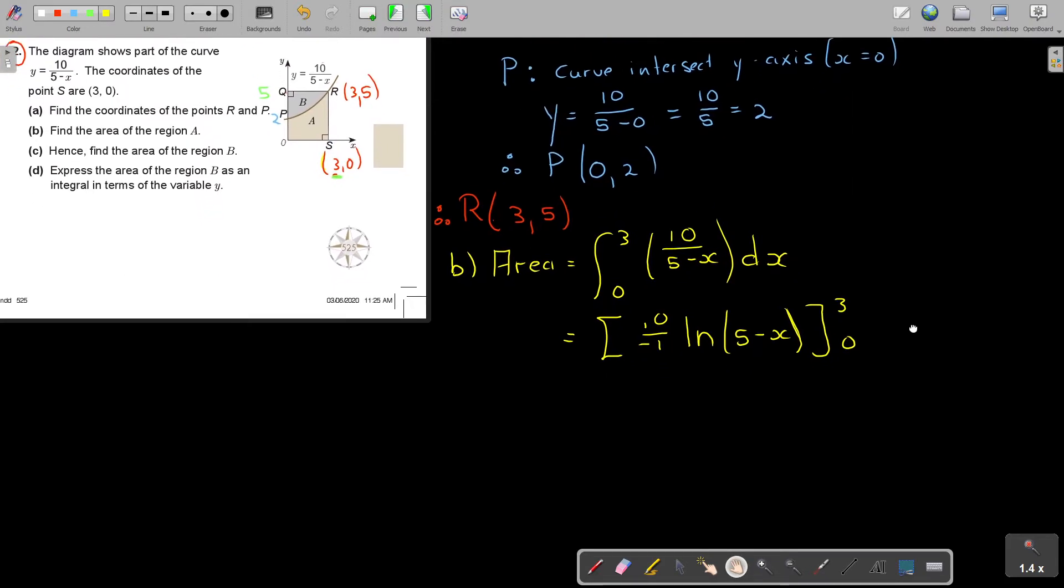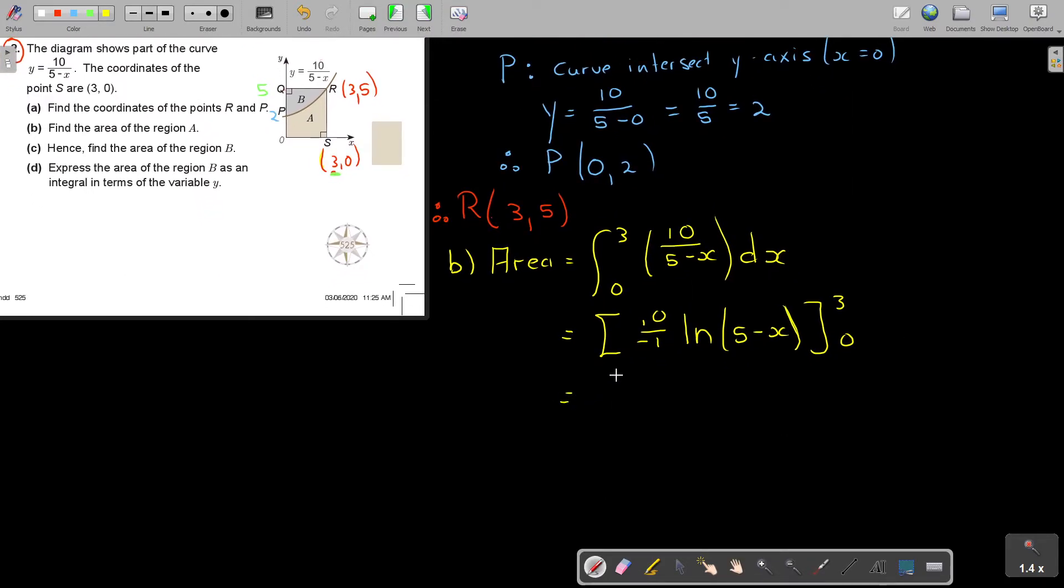Okay. So, basically, I'm just going to, it's not necessary, but, so remember, it's negative 10, ln, 5 minus x. It was not necessary, but it's not necessary, this step, 3 and 0. Okay. So, I'm going to substitute. So, it's negative 10, ln, and now I'm going to substitute that 5 minus 3, minus negative 10, ln, and then it's going to be 5 minus 0.